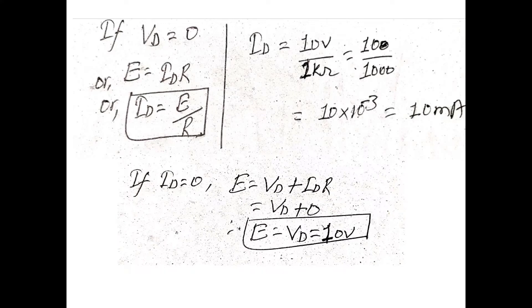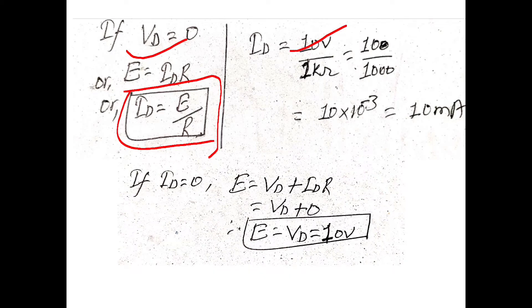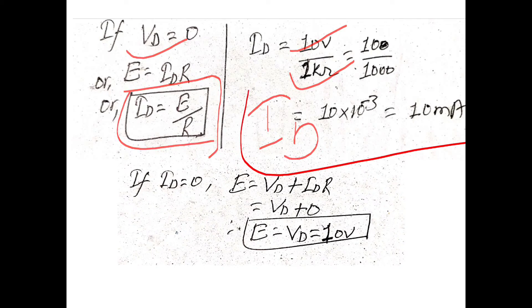Now suppose the value of VD, the voltage drop across the diode, is equal to 0. Substituting VD equals 0 into equation number 1, we find that ID equals E divided by R. With E equal to 10 volts and R equal to 1 kilo ohm, by calculation we obtain ID equals 10 milliampere.